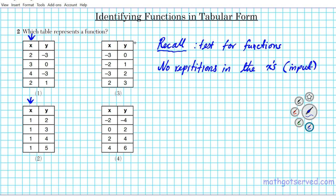Since our focus is on the x-values or inputs, we just focus attention on the first column in the four options. Table one: there's a 2 going to negative 3 and a 2 going to 1 — the same input goes to two different outputs, that is not a function. Option two: all x-values are the same — one, two, three, four — that has four repetitions, so it's not a function either.